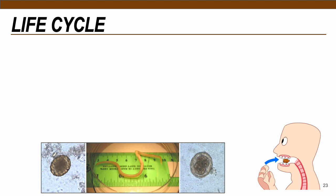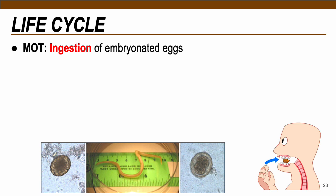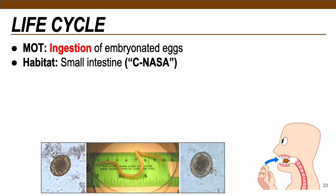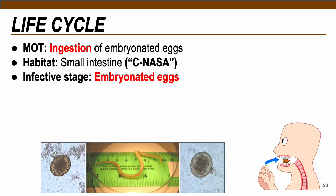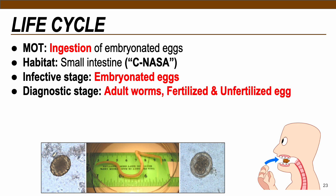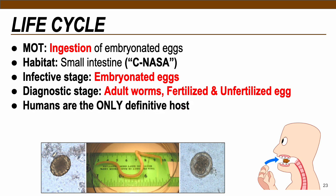The mode of transmission for Ascaris lumbricoides is ingestion of embryonated eggs, normally through fecal contamination of soil. Adult worms inhabit the small intestine — remember the acronym CNASA. The infective stage is the embryonated egg, and diagnostic stages include adult worms and fertilized or unfertilized eggs. Humans are the only definitive host with no intermediate host; we harbor both larval and adult forms.